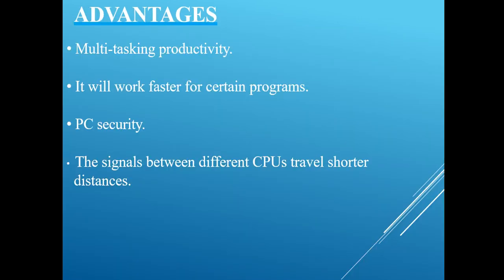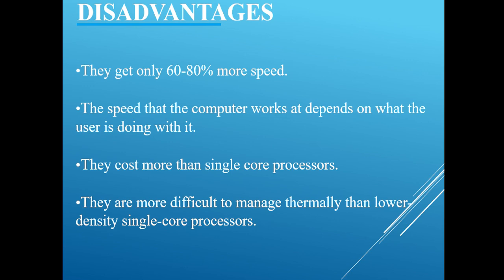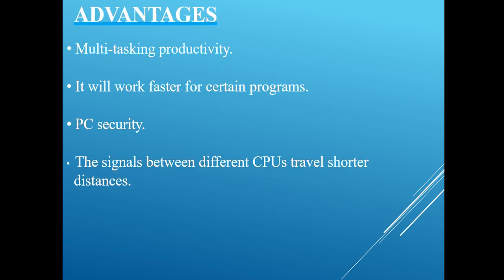Each thing has its advantages and disadvantages, starting with the advantages. Multitasking productivity is the first advantage of multi-core processors. It also works faster for certain programs, increases the security of the PC, and the signal between different CPUs travels a shorter distance.